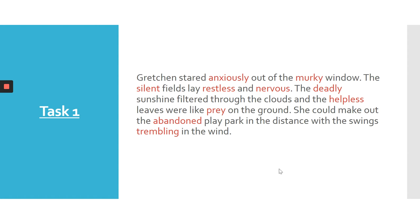'The silent fields lay restless and nervous.' Describing the fields as restless and nervous — personifying these nouns — is really important because it helps create the idea that something bad might happen. It's almost as if the environment can feel something is going to occur. 'The deadly sunshine filtered through the clouds and the helpless leaves were like prey on the ground.' Using this simile to describe the leaves as being like prey — helpless — creates anticipation that an attack could happen at any moment.